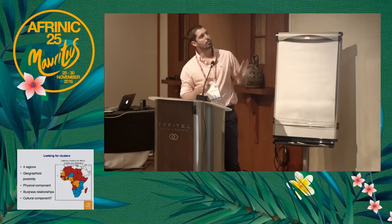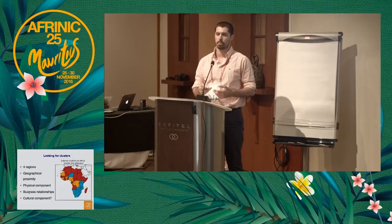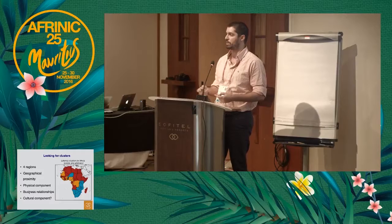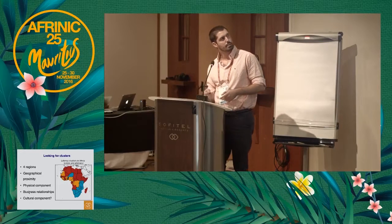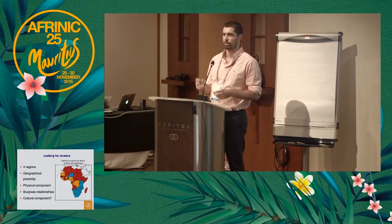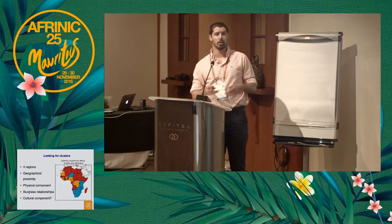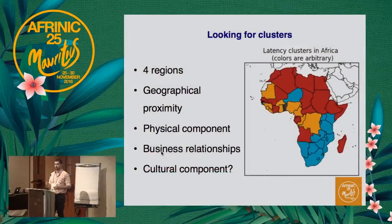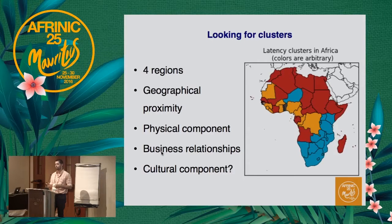At the beginning, we saw it had a very strong geographical component, which was predictable as close countries tend to have good connectivity between them. But we started to ask further questions. Some examples of countries that are surrounded by another cluster — another community — for example, Niger or Madagascar. They belong to one cluster but are actually surrounded by countries who belong to another cluster.